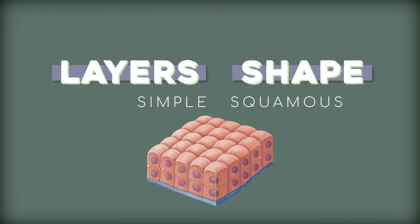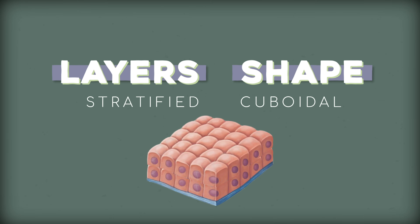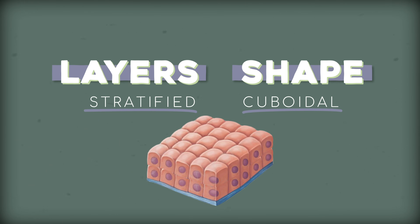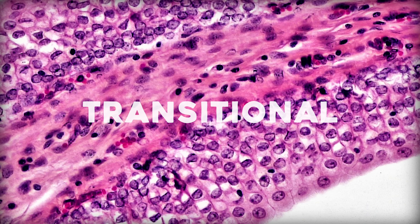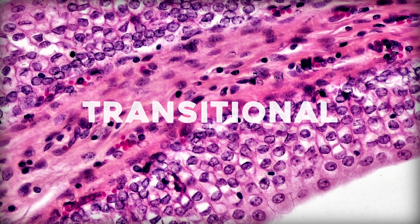Back to histology. When we name epithelial cells, we say the layer style first, then the shape. Simple squamous, for example, starts with the layer style — simple — then the shape — squamous. Or stratified cuboidal: multiple layers of cube-shaped cells. Finally, there's transitional epithelium, which is a jumble of epithelial cells around organs like the bladder or urethra that lets them stretch. So when you have a slide of epithelial cells in front of you, remember to account for shape and layers.